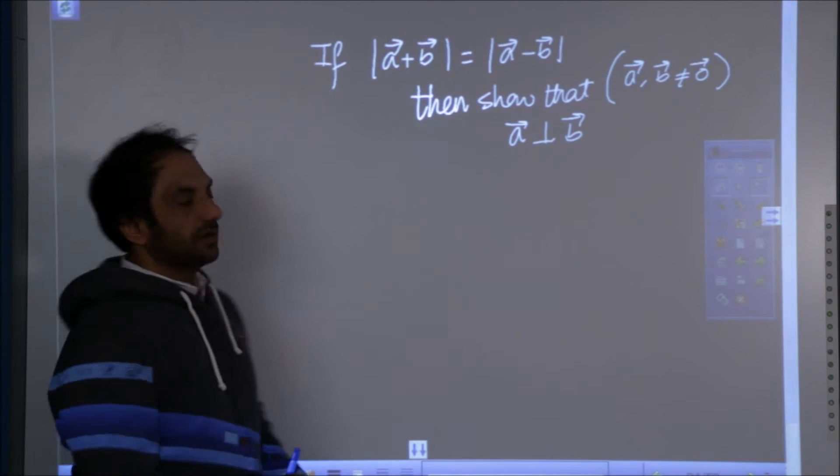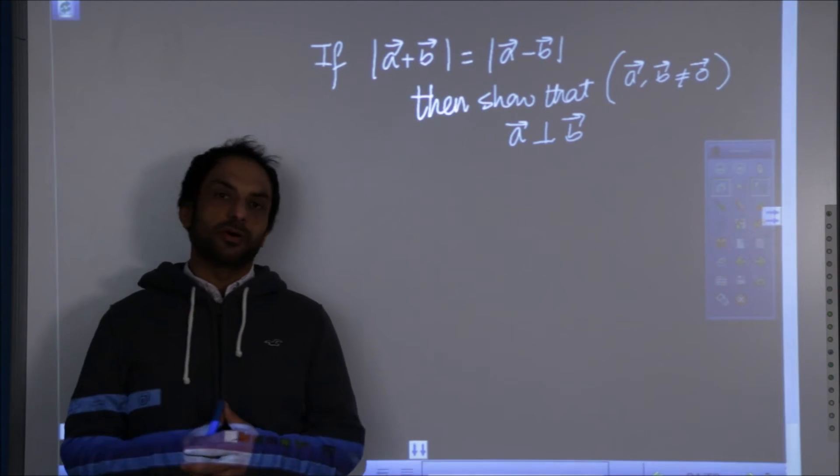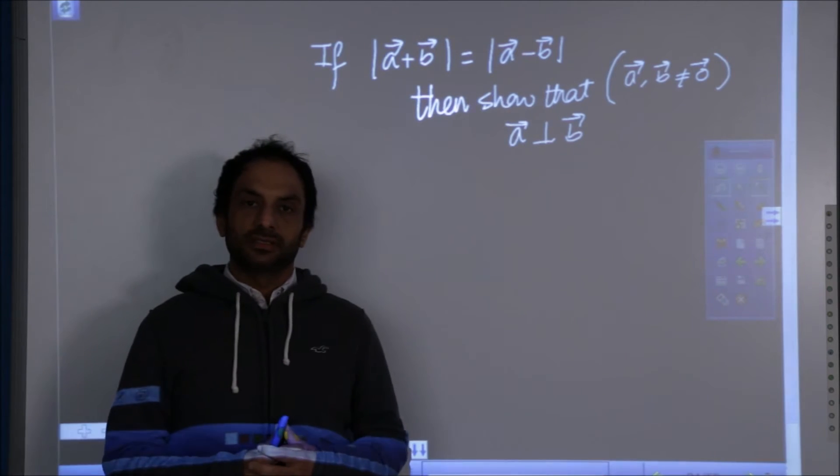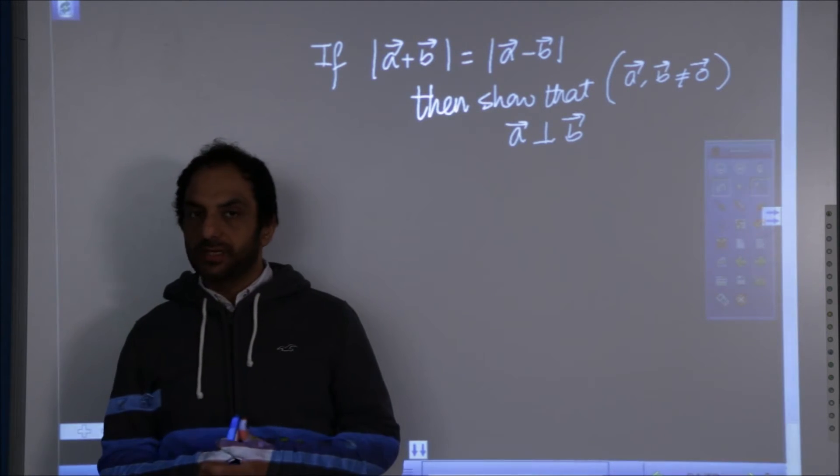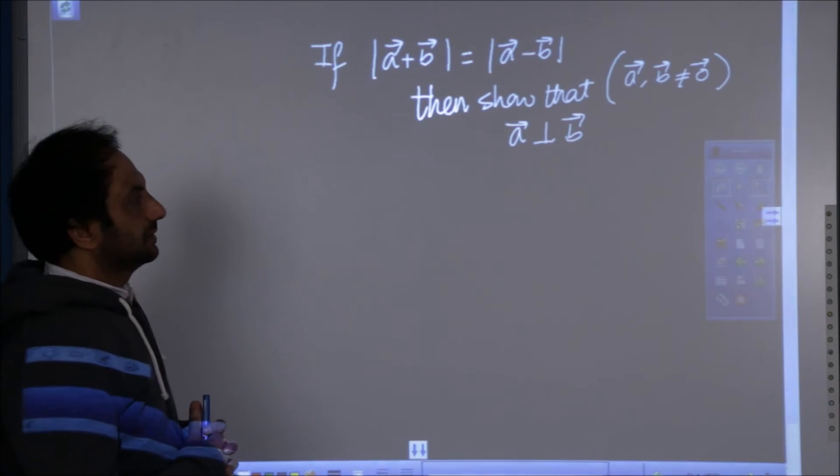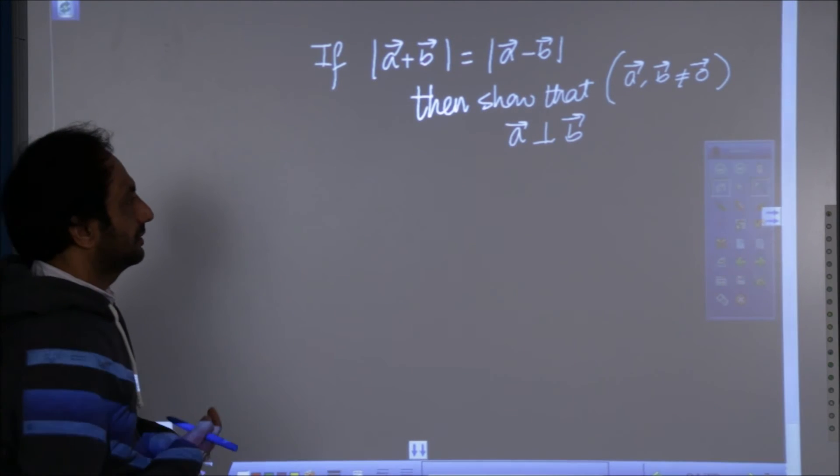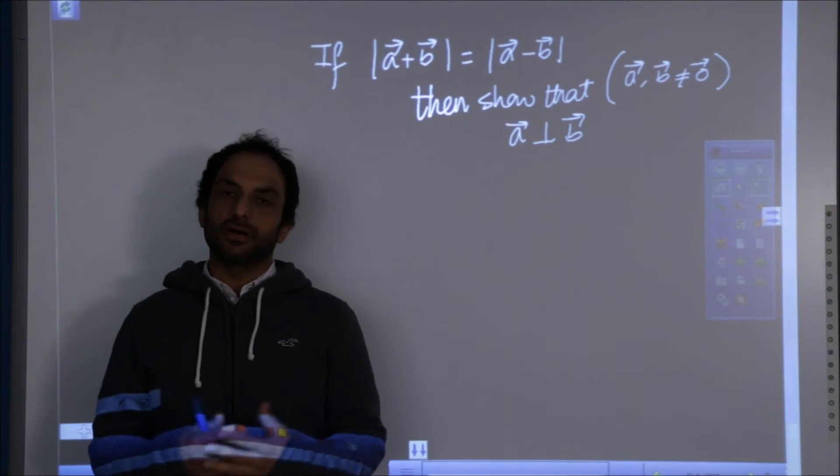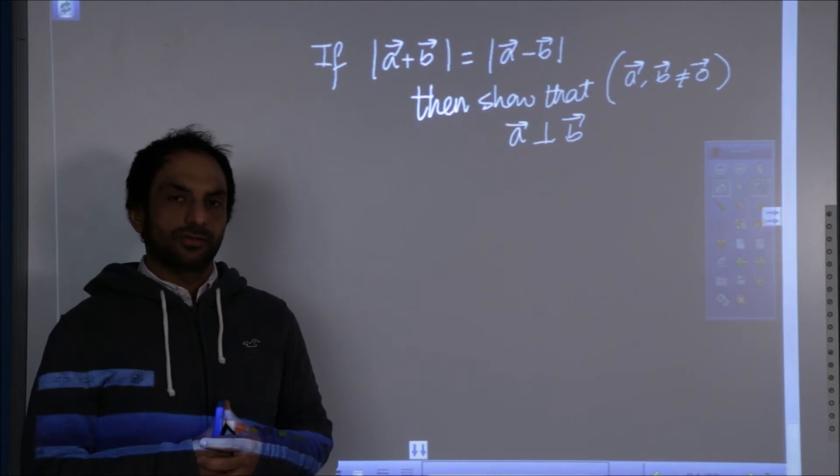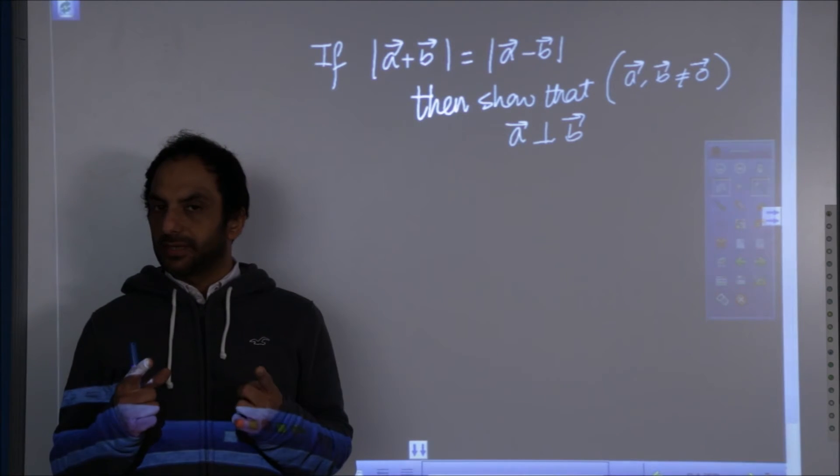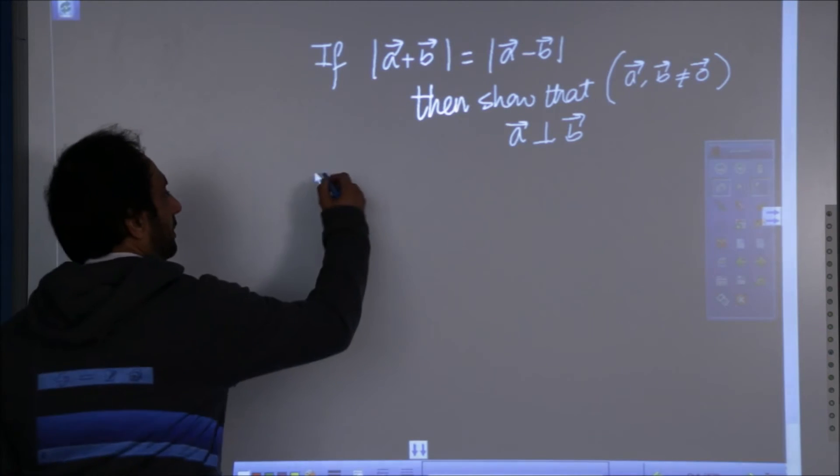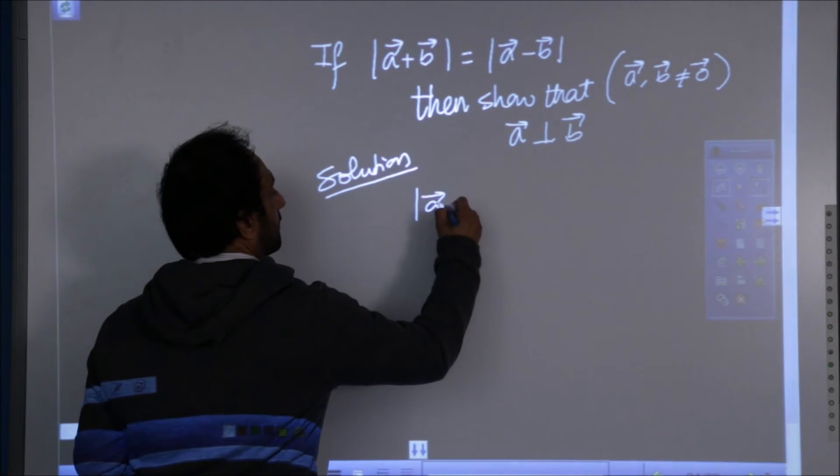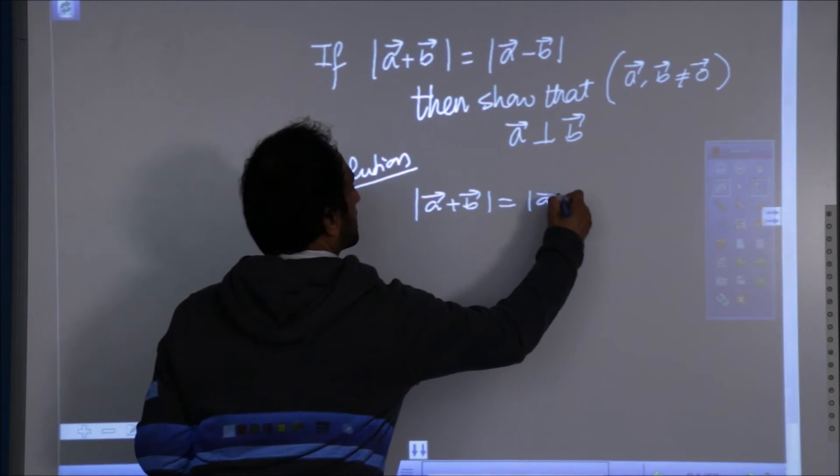If mod of a plus b vector is equal to mod of a minus b vector, then show that the two vectors a and b are perpendicular to each other and none of the vectors is a zero vector. Well, we are given the magnitudes and we have to comment on the vectors. So, squaring probably is the technique.